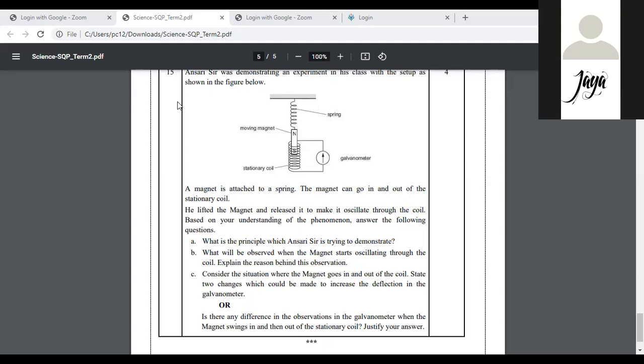We part what will be observed. When the magnet starts oscillating through the coil, I'll explain the reason behind this observation. Now when the magnet oscillates, our observation is that there will be a deflection in the galvanometer. C part is consider the situation where the magnet goes in and out of the coil. State two changes which would make, which could be made to increase deflection in the galvanometer. Now what we can do is that the galvanometer has more deflection in the galvanometer. We asked two things. One is that by moving the magnet faster we can do this. There will be more deflection when we move the magnet at the speed of the magnet. Second thing is that by increasing the number of turns of the coil. So the magnet will become strong and the induced current will also produce strong. So what can you do is that you can increase the number of turns in the coil. It will be strong magnetic field and the strength of the induced current will also be more.